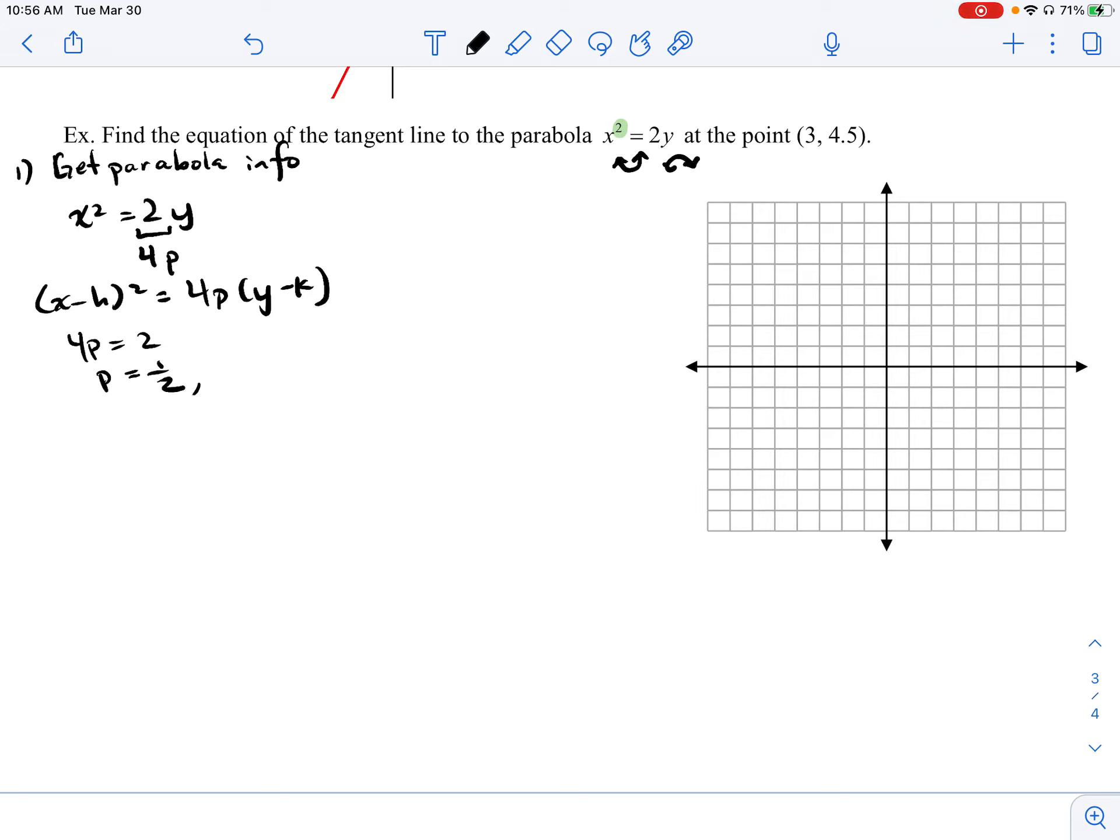Since this p value is positive, it's greater than 0, I know that my focus is going to be above my vertex. So based on the standard form equation, ask yourself, where is my vertex?